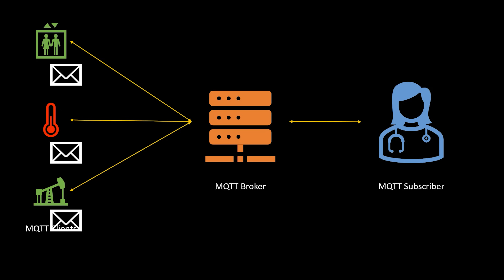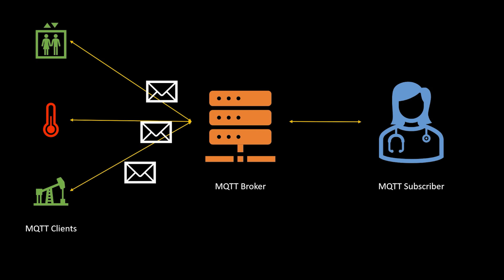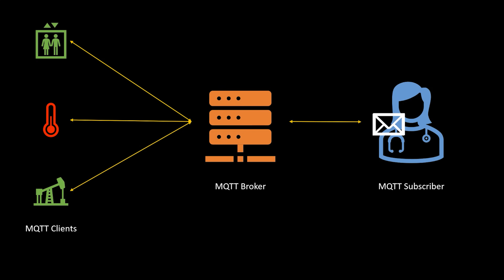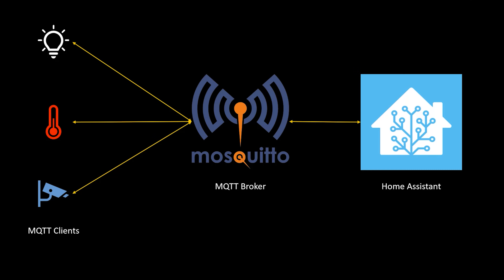From there, any number of systems or applications can subscribe to the MQTT broker and they will get told when a new MQTT message is waiting for them. This is what makes it really popular in smart homes too. MQTT is great at gathering information from low power and low bandwidth home automation sensors and switches. The home automation platform I use, called Home Assistant, works really well with MQTT and a specific broker called Mosquitto.